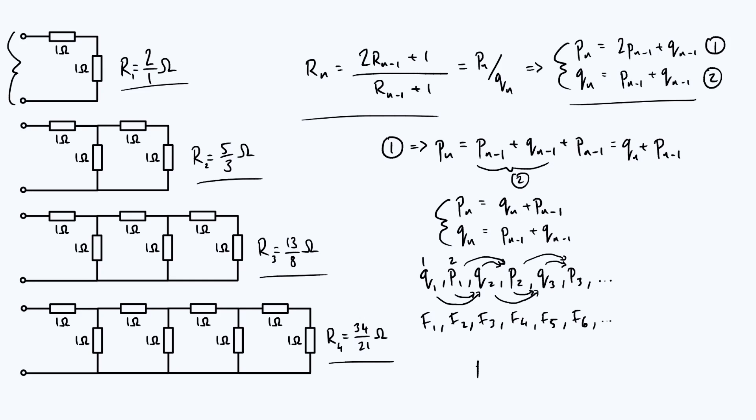So that allows us to write a general expression for Rn in terms of the Fibonacci numbers Fn. So just by comparing these two sequences, you can see that Pn is just the same as F2n. P1 is F2, P2 is F4, P3 is F6, and so on. So that generalizes to F subscript 2N on the top and on the bottom,